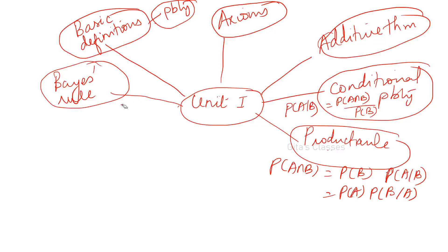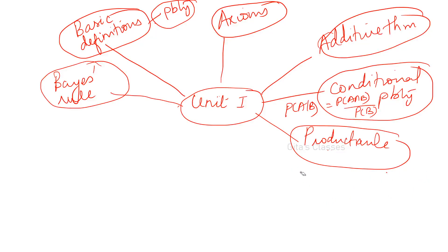Please go through those problems because they are very detailed. Even last year there was a question: 30%, 30%, and 40% of total product from three machines, with 2%, 3%, and 4% defective respectively. If one defective item is selected, what is the probability it came from machine one, two, or three? Practice one or two such problems — you can definitely expect one Bayes' rule question for five marks minimum.